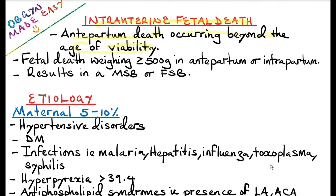Intrauterine fetal death is antepartum death occurring beyond the age of viability. In developing countries the age of viability is 28 weeks gestational age, whilst in developed countries it can be 20 or 22 weeks gestational age. It can also be defined as fetal death weighing more than 500 grams occurring before the onset of labor or during labor.